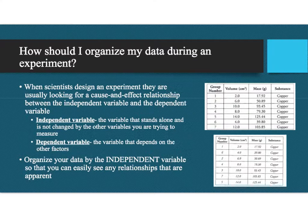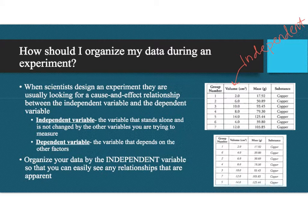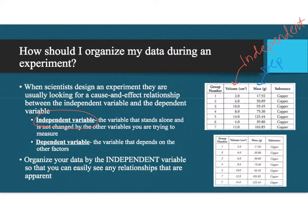A dependent variable is the variable that depends on other factors. In one of the activities we did, volume was the independent variable because it stands alone — it's not changed by the mass. The mass of something is going to depend on how much you have of it, so volume is the independent variable, whereas mass was the dependent variable because the mass depends on how much volume or how much of a substance you have. The more volume you have, the more mass it's going to be, and you can actually see that on this chart here.